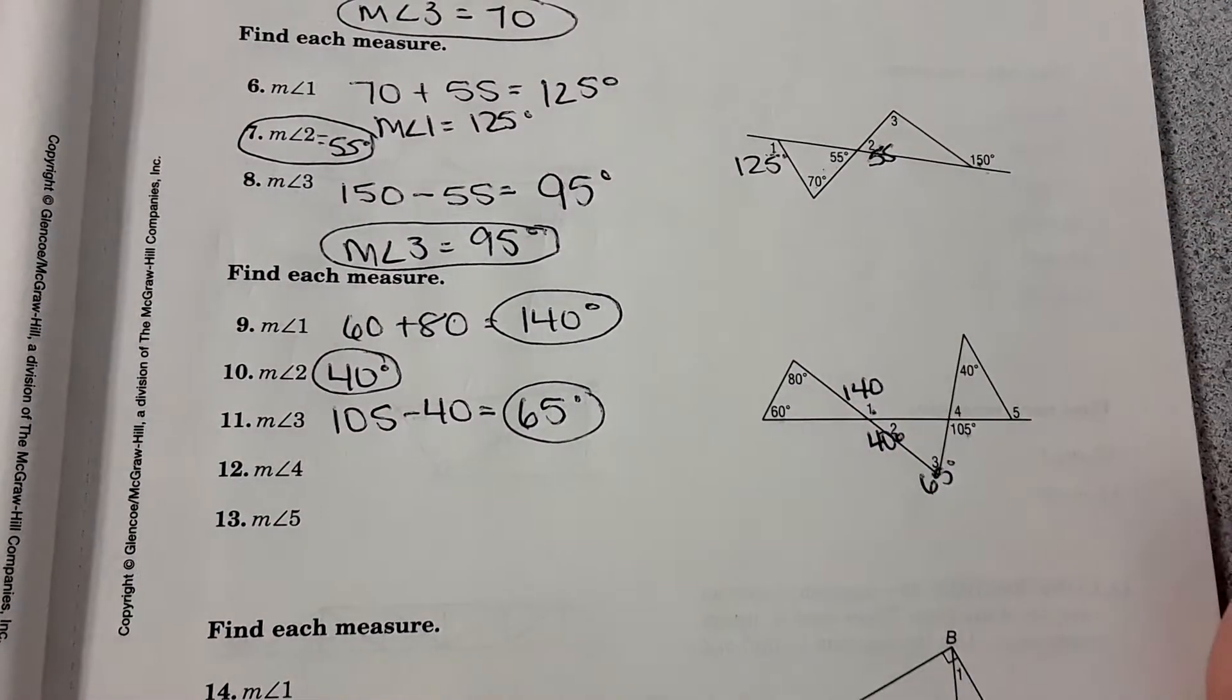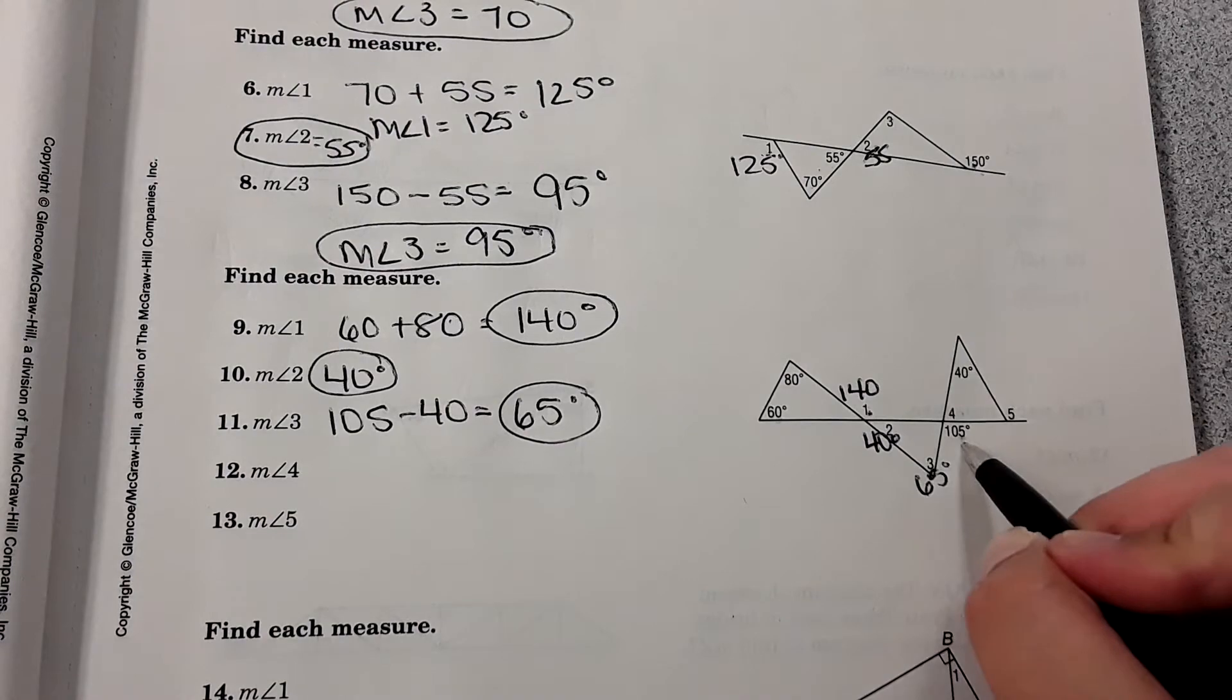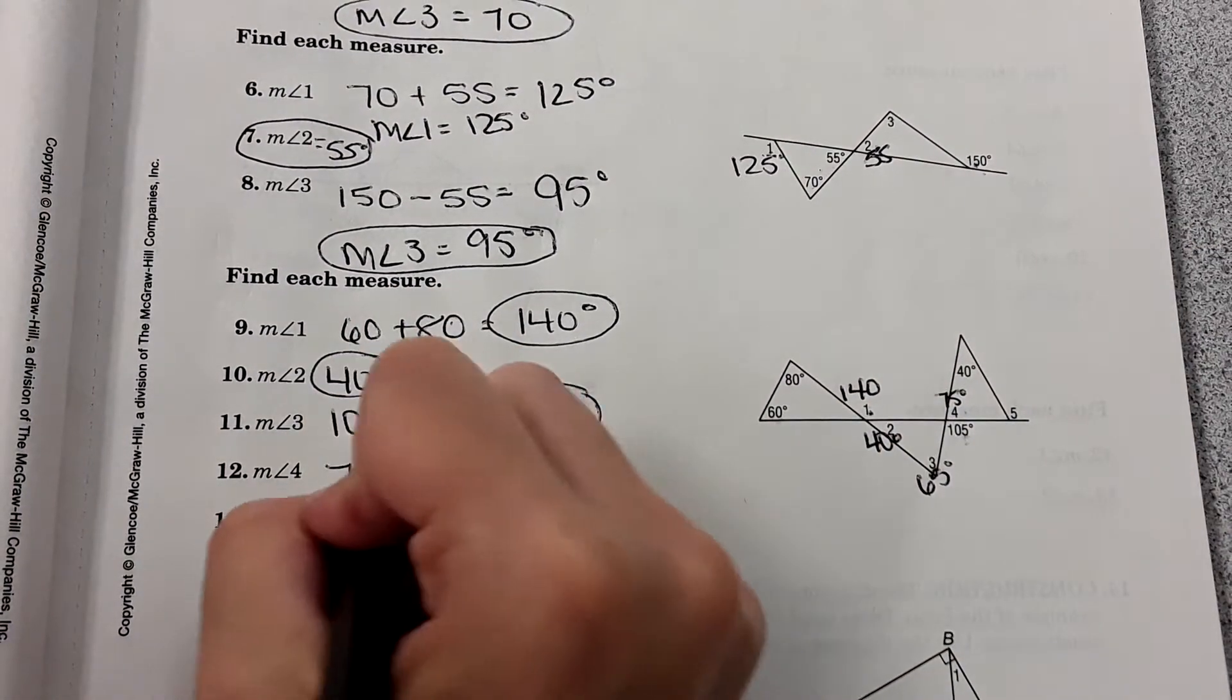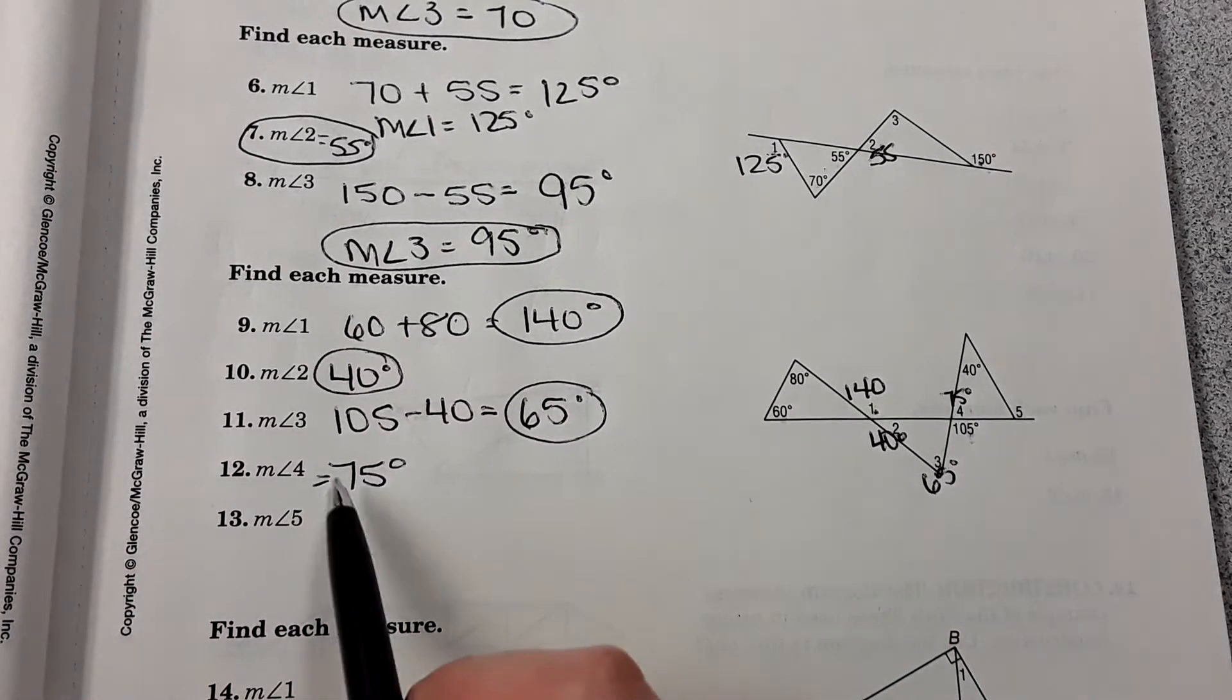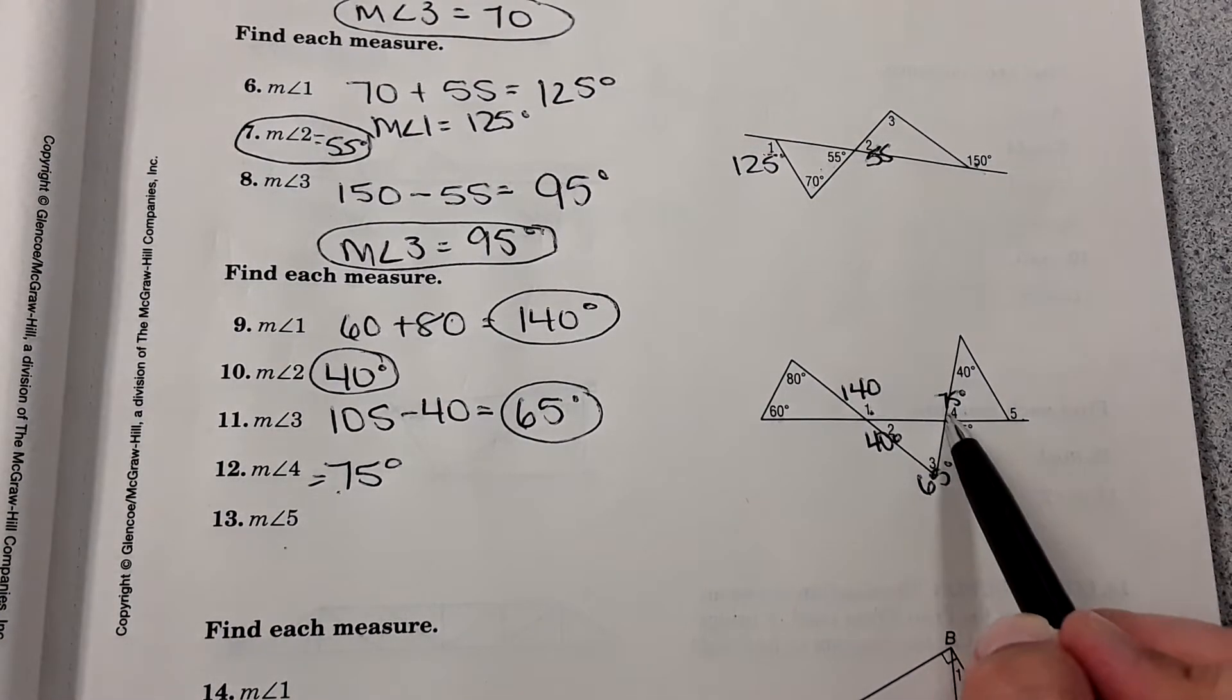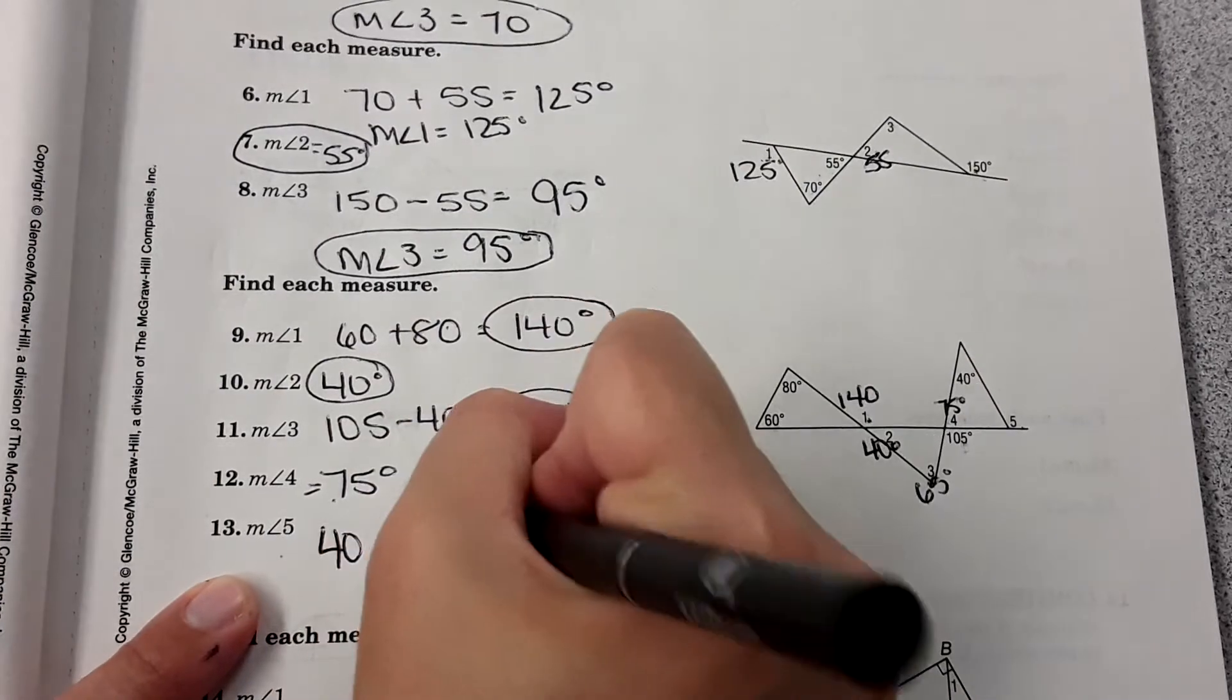So again, I'm going to just jot that down. Angle four right here forms a linear pair with the 105, so that must be 75 degrees. And then measure of angle five, this exterior angle would be the sum of these two, so 40 plus 75, 115. Nice work.